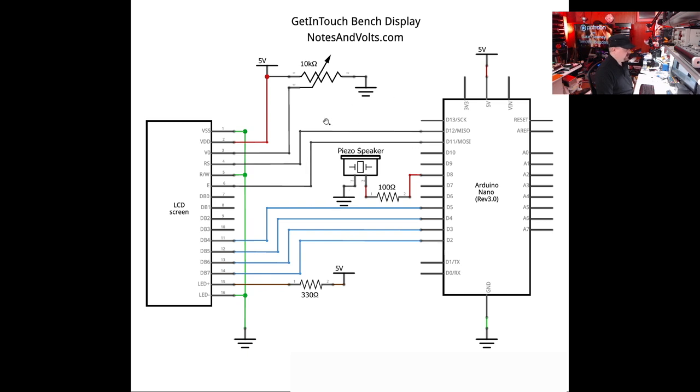We're going to connect the five volt of the LCD screen to the five volt pin on our Arduino. Here we have a 10k potentiometer, and one side is connected to ground, the other side to five volts, and the wiper is going to this VO pin, which sets the contrast of the LCD screen. Next, we have the VSS, the read-write, and the LED- all going to ground. So the LED plus and LED minus are the backlight terminals for the LCD screen.